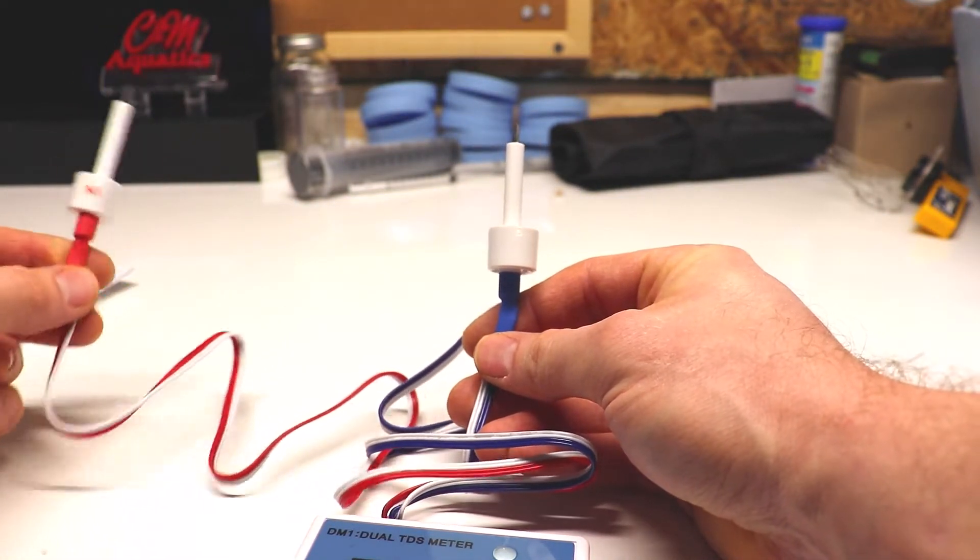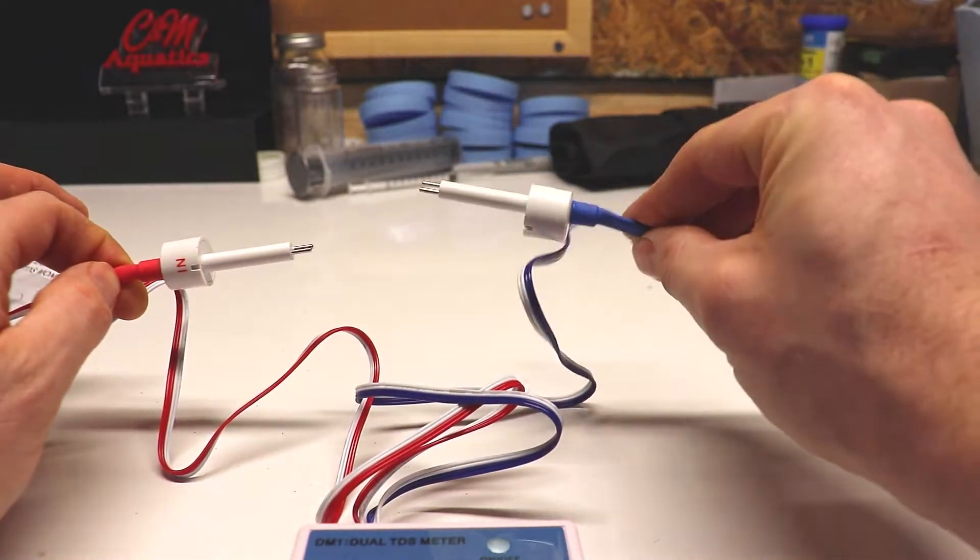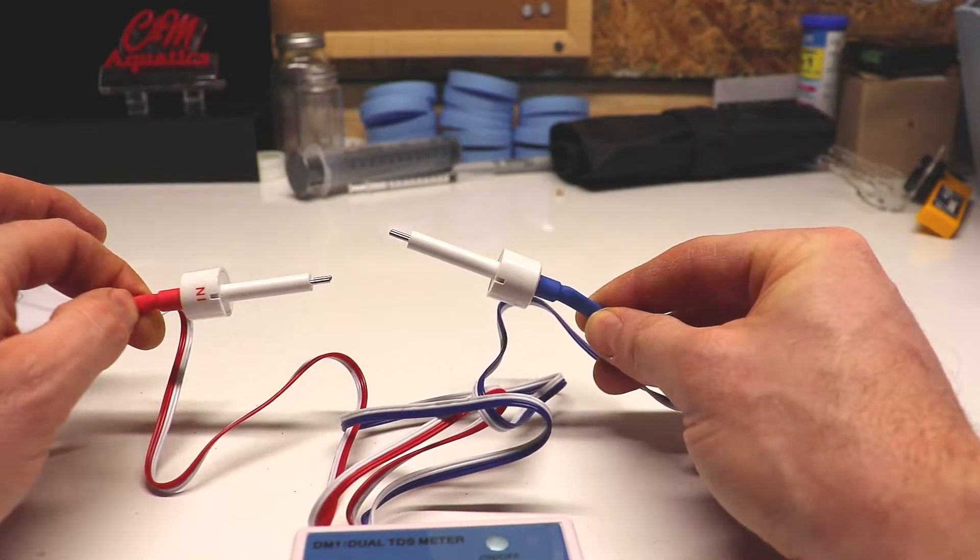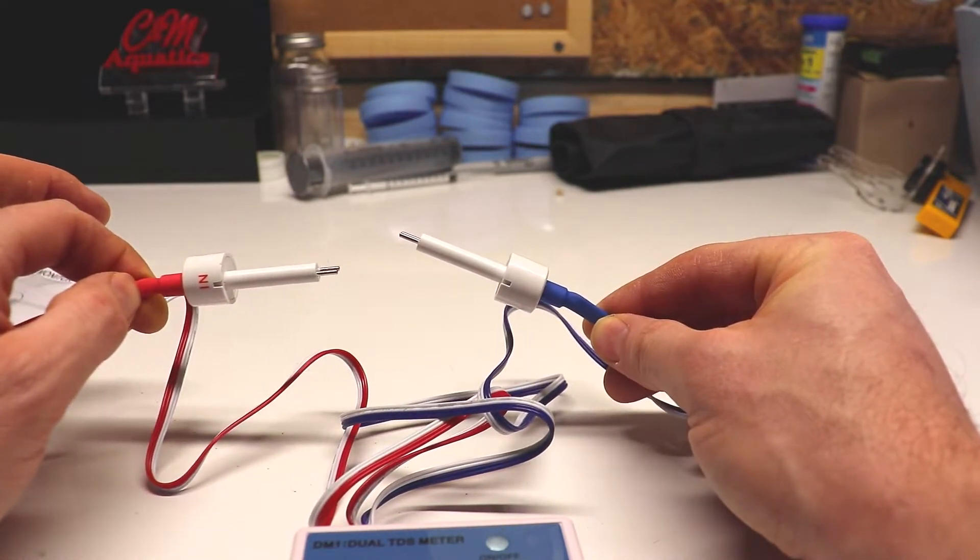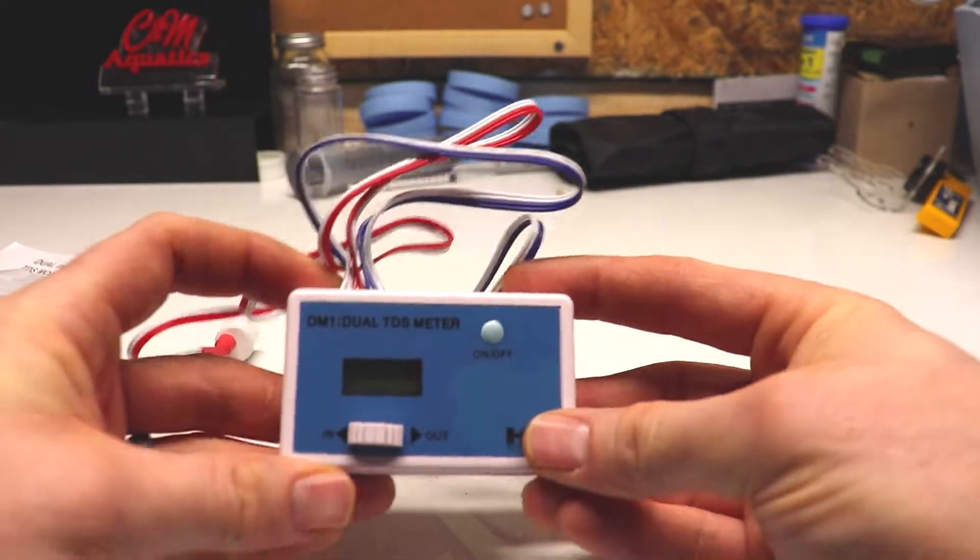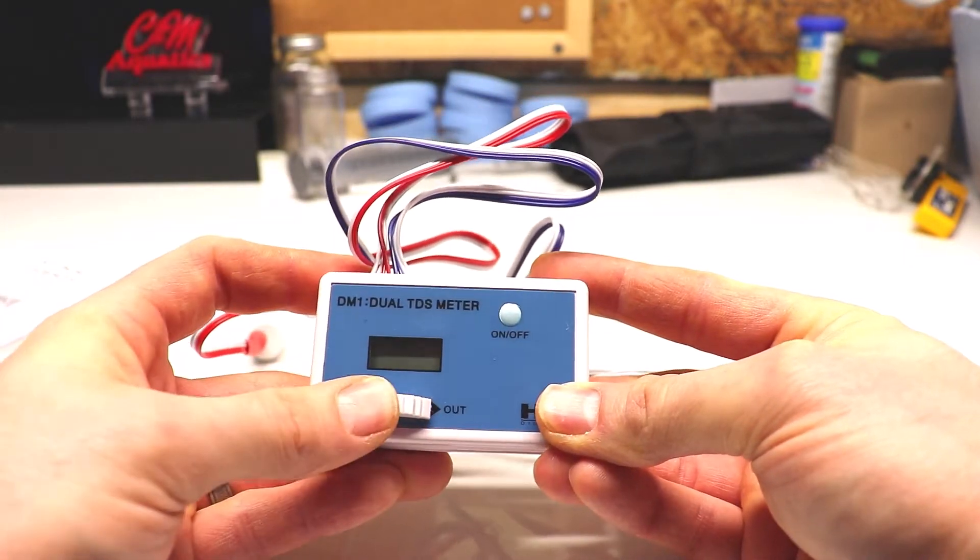How these little meters work is you'll have a probe that attaches to your RODI filter for the water that comes into your filter and it'll measure the total dissolved solids. Then you'll have a line, the blue line here, that measures the output. So you'll measure the water coming into your filter and then coming out of your filter.